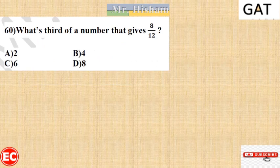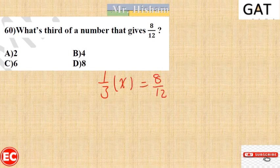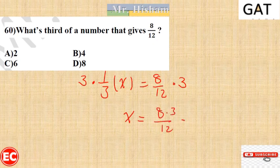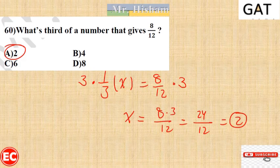Question 60: What is the third of a number that gives 8/12? One-third of x equals 8/12. Multiplying both sides by 3: x equals 8 times 3 divided by 12, which is 24/12, which equals 2. The right answer is 2.